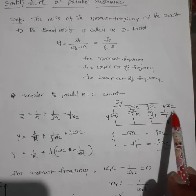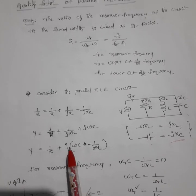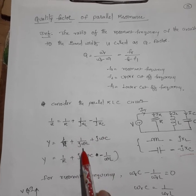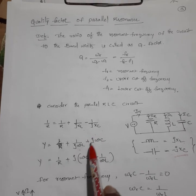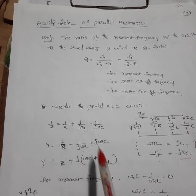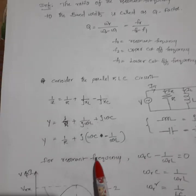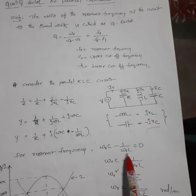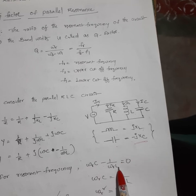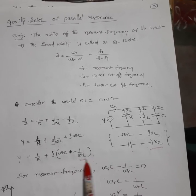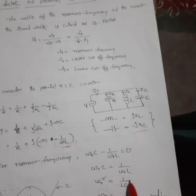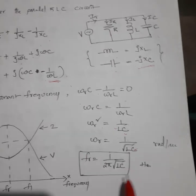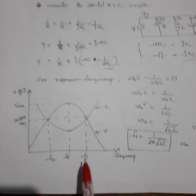Expanding: 1/Z = 1/R + j(ωC − 1/(ωL)). For the resonance condition, the imaginary term is set to zero: ωC − 1/(ωL) = 0. From this, ω² = 1/LC, so ω = 1/√(LC), and the resonant frequency is F₀ = 1/(2π√(LC)).